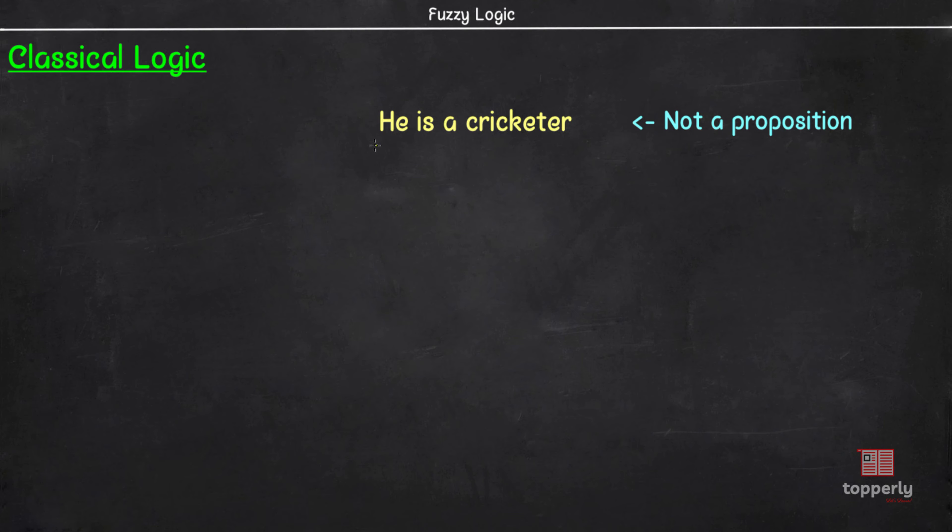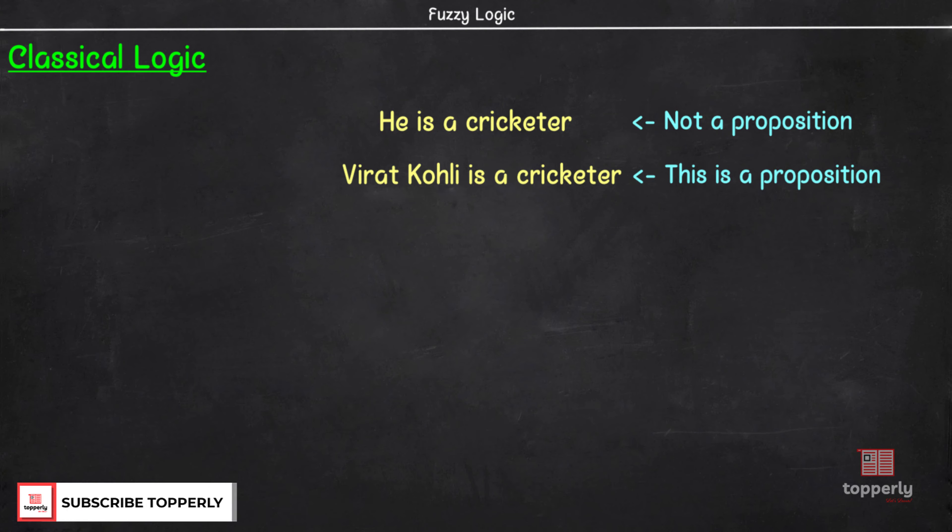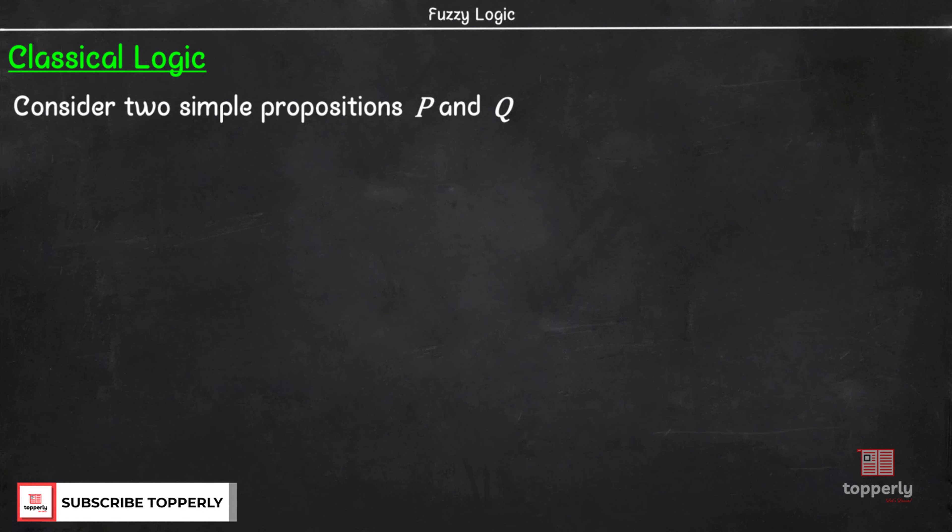However, if we identify the person, then the sentence becomes a proposition. That is, the statement, Virat Kohli is a cricketer is a proposition. Now, consider two simple propositions P and Q. Then, we can use logical connectives to form new propositions.